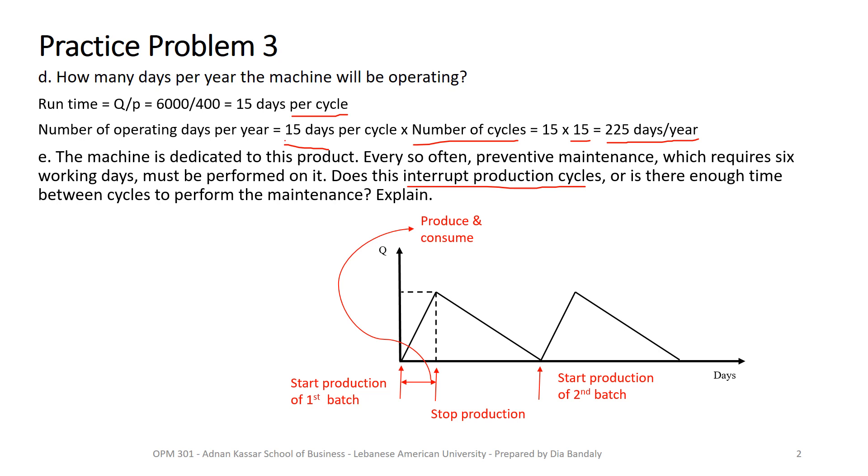And between stopping the production and starting the new batch or the new cycle, this is a time when we are simply consuming. We stopped here our production, and from this time point onwards, we simply consume. Let's call this point time T1 and this point time T2. So what is T2? T2 is the cycle time. This is one cycle. Every triangle is one cycle. So T2 represents the end of the first cycle.